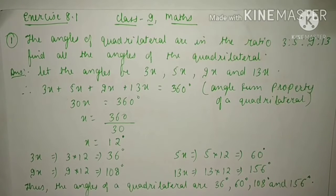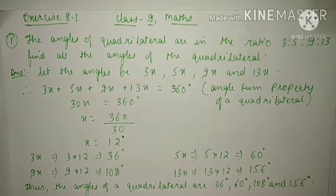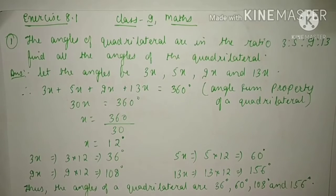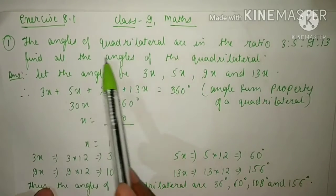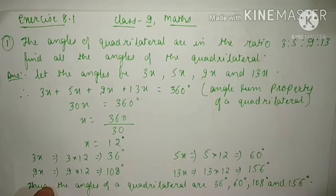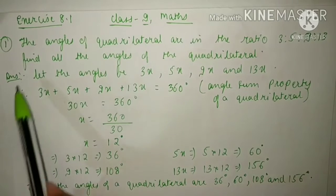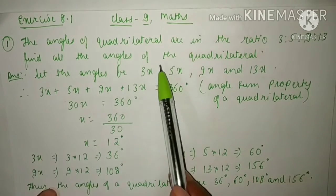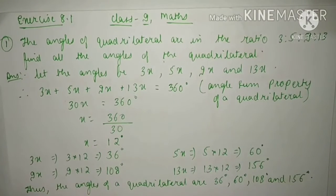Today we'll start Exercise 8.1. The first question: the angles of a quadrilateral are in the ratio 3:5:9:13. Find all the angles of the quadrilateral.